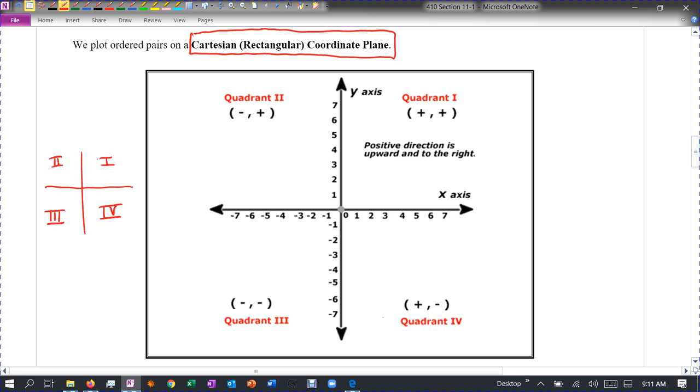So it goes counterclockwise. You start with the top right, and then that's quadrant one, that's quadrant two, quadrant three, quadrant four. So we're going around counterclockwise when we're counting these.